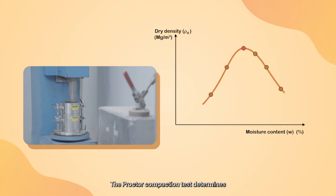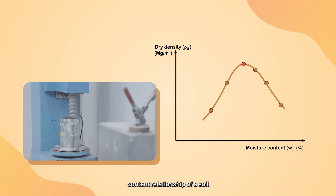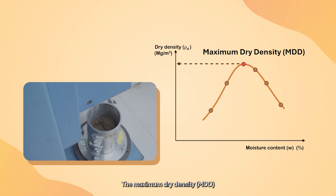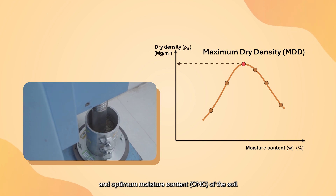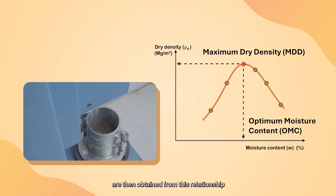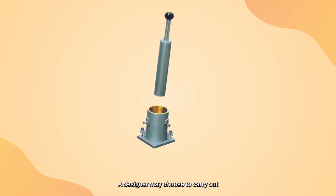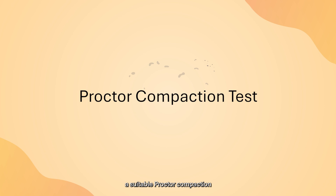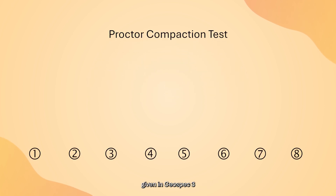The proctor compaction test determines the dry density and moisture content relationship of a soil under a specific amount of compactive effort. The maximum dry density (MDD) and optimum moisture content (OMC) of the soil are then obtained from this relationship. A designer may choose to carry out a suitable proctor compaction test from the eight different tests given in GeoSpec 3.